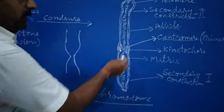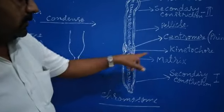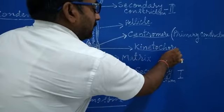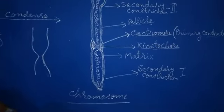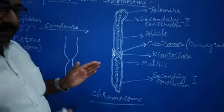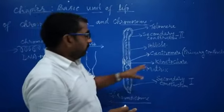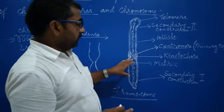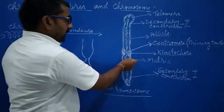Now this centromere is covered by another structure, and the structure which covers centromere is called kinetochore. It is made up of protein which is proteinaceous in nature. Kinetochore is a protein which covers the centromere.